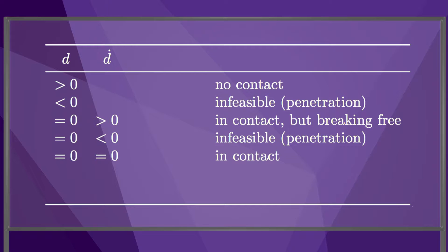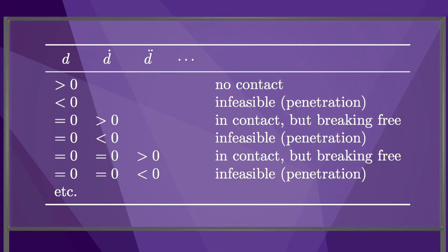If d and d dot are zero, the bodies are in contact, but if d double dot is greater than zero, the contact is about to break. We could continue this analysis for increasing derivatives of d. The bodies only remain in contact if all time derivatives of d are equal to zero.